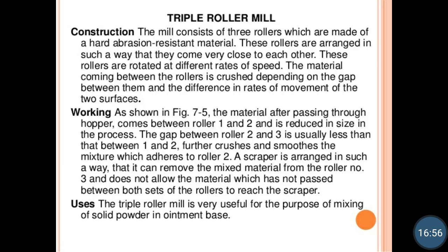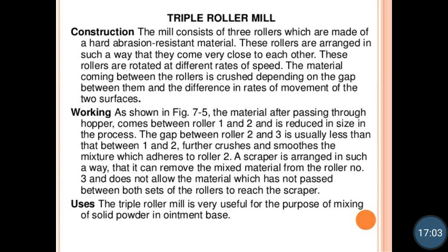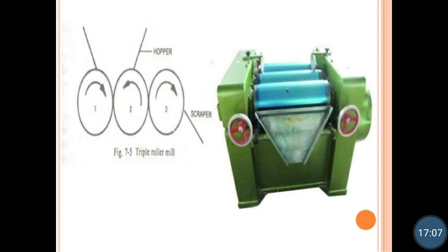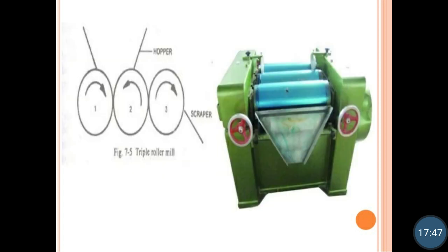The first equipment is the triple roller mill. You can see in the diagram what a triple roller mill is. It has three rollers. The mill consists of three rollers which are made up of hard, abrasion-resistant material, and these rollers are arranged in such a way that they come very close to each other. These rollers are rotated at different rates of speed.